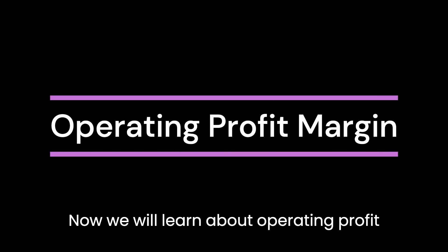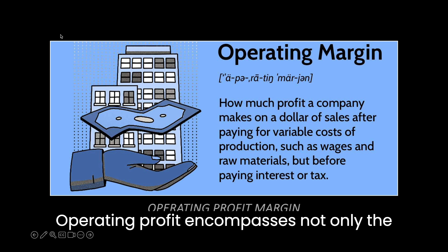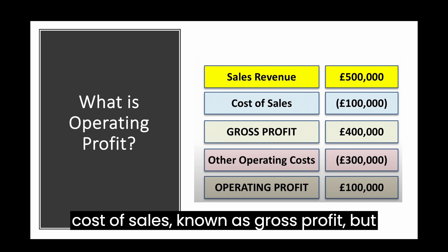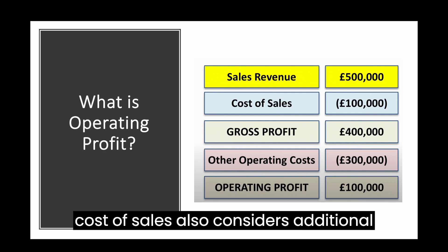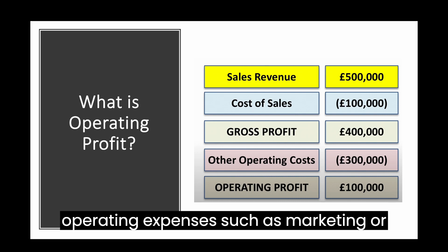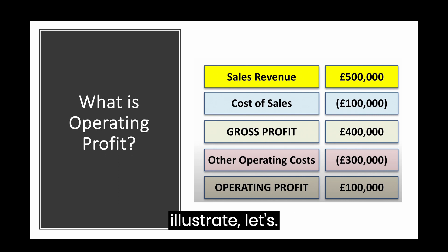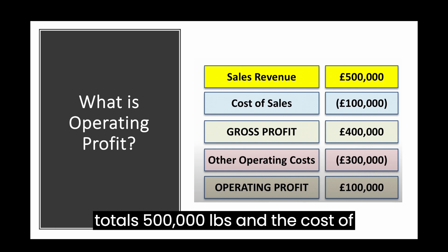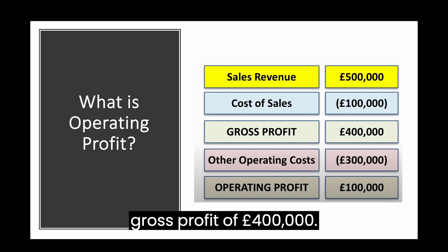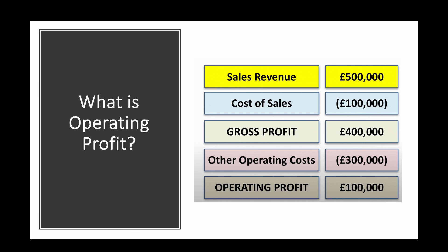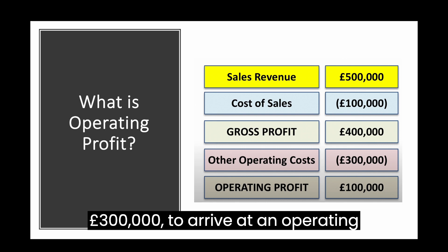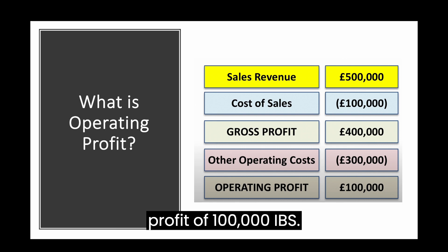Now we will learn about operating profit margin. Operating profit encompasses not only the difference between sales revenue and the cost of sales — known as gross profit — but also considers additional operating expenses such as marketing or rent and rates. To illustrate, consider an example where sales revenue totals £500,000 and the cost of sales is £100,000, resulting in a gross profit of £400,000. However, this isn't the final profit, as we must deduct other operating costs — say £300,000 — to arrive at an operating profit of £100,000.